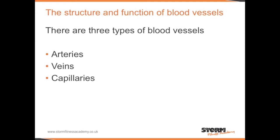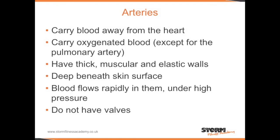Blood vessels have different structures and different functions. There are three types of blood vessels: arteries, veins, and capillaries. Arteries have very specific characteristics: they carry blood away from the heart, they generally carry oxygenated blood except for the pulmonary artery, they have thick, muscular and elastic walls, they're found deep beneath the skin surface, and the blood flows rapidly in them under high pressure. They do not have valves.